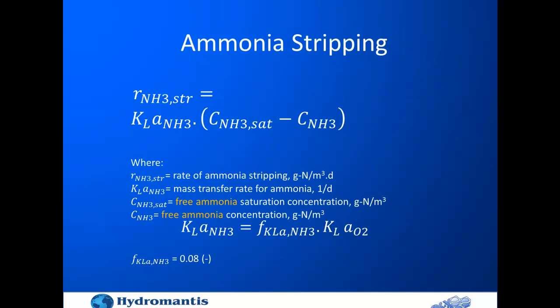In addition to stripping reactions for other gases like hydrogen, methane, and CO2, we have now introduced ammonia stripping. The expression uses free ammonia concentration, since free ammonia is pH-dependent and is what participates in the stripping reaction. The KLA for ammonia is estimated as a multiplier of the oxygen KLA, with a default value of 0.08.